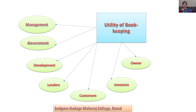Utility to management: management of an enterprise can plan, take decisions and control overall business activities. Next is utility to investors: investors can take proper decisions whether to invest or not.